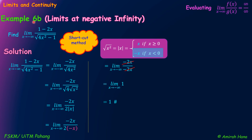From example 6a, when we solve the limit at positive infinity and choose modulus x equals positive x, we get the final answer equals negative 1. But in example 6b, when we solve the limit at negative infinity using the same function and choose modulus x equals negative x, we get the final answer equals positive 1, because we simplify from negative over negative in the numerator and denominator.